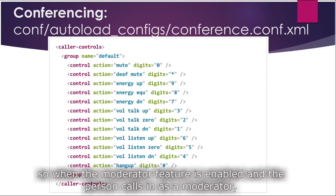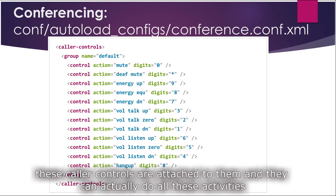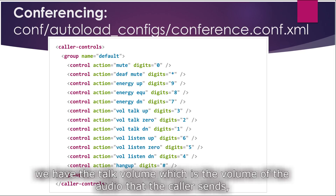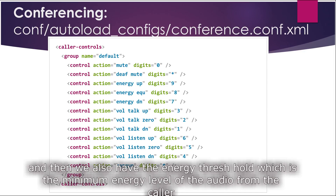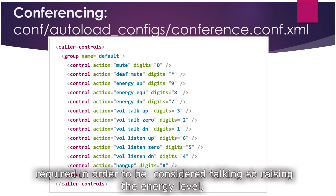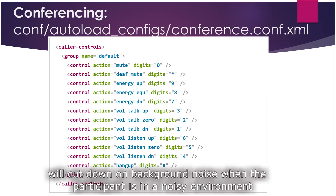When the moderator feature is enabled and a person calls in as a moderator, these caller controls are attached to them and they can perform all these activities. We have the talk volume, which is the volume of the audio the caller sends, and the listen volume, which is the volume of the audio the caller hears. We also have the energy threshold, which is the minimum energy level of audio from the caller required to be considered talking — raising the energy level will cut down on background noise when a participant is in a noisy environment.